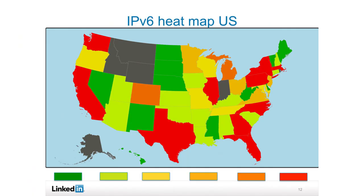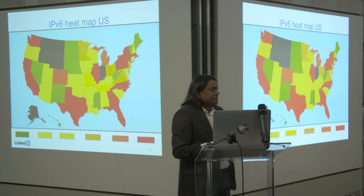The heat map in the US kind of looks like this. For most of you that do analysis in the US, this may seem very familiar. California, East Coast, New York, Pennsylvania, Florida — all look really red. I think there's still a lot of adoption in the US that needs to happen in my opinion, but these are some of the numbers we're seeing.